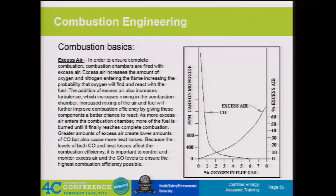This is the classic curve that you've probably seen—with the relationship of, as you supply more excess air into a system, you're driving down the products of incomplete combustion, your carbon monoxide. This is fuel dependent—different fuels require different amounts of excess air. Natural gas requires a lower excess air concentration. When you're looking at coal or other solid fuels, you usually have to run a higher excess air content. So this profile is somewhat system and fuel dependent, but in general, the relationship is the same. The more excess air you're putting into the system, the more chance to get to complete or stoichiometric combustion. Zero is the point where your air flow is ideal for the fuel input, and then additional air is needed to overcome inefficiencies in the system.